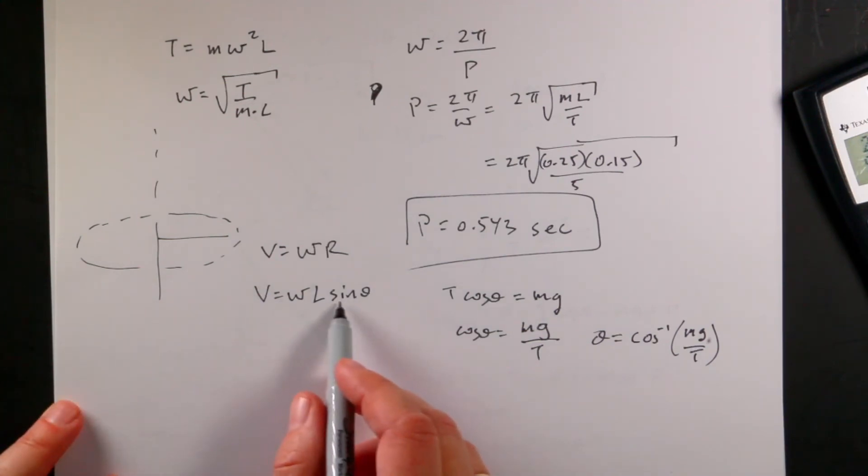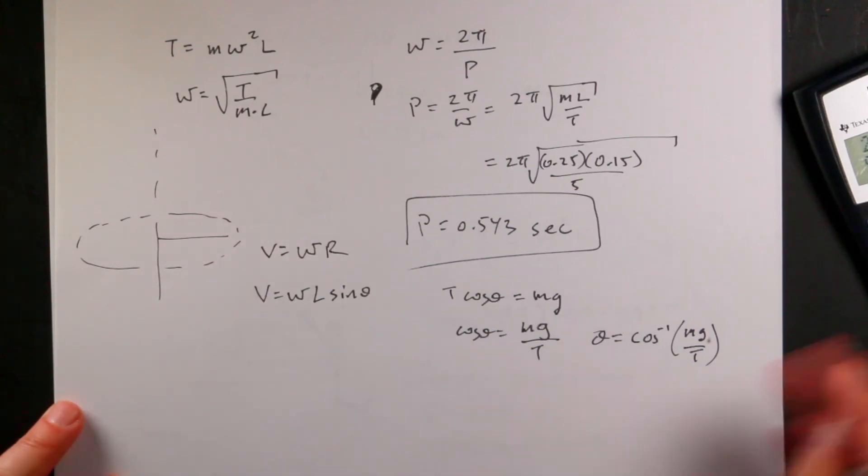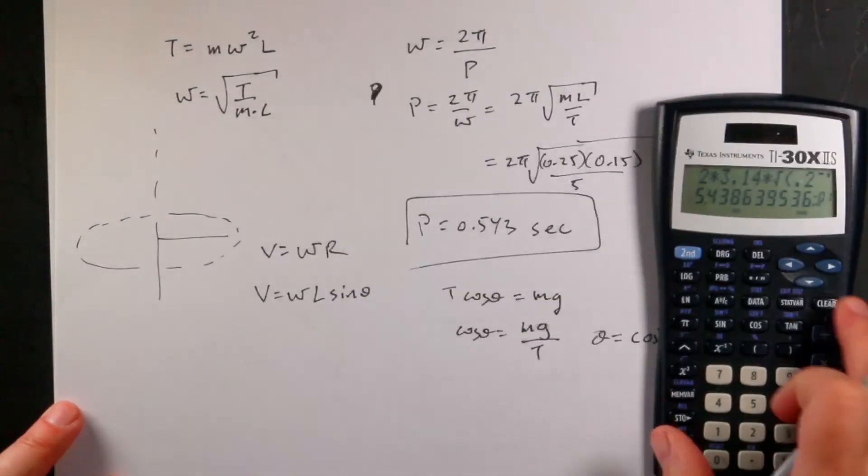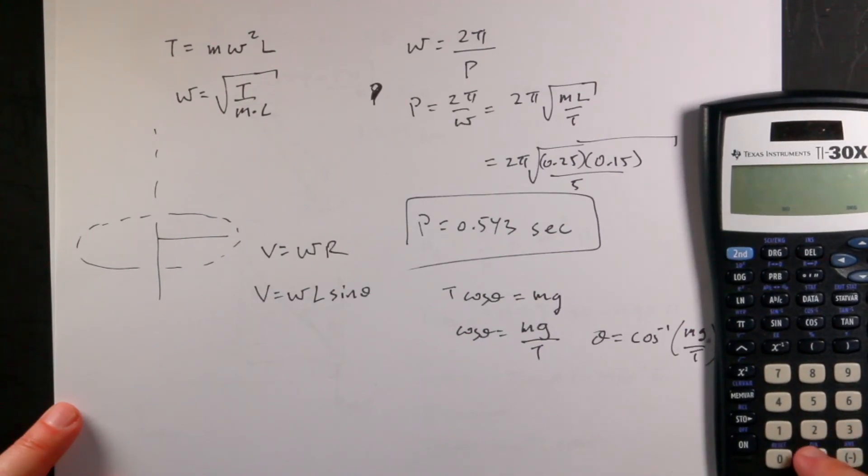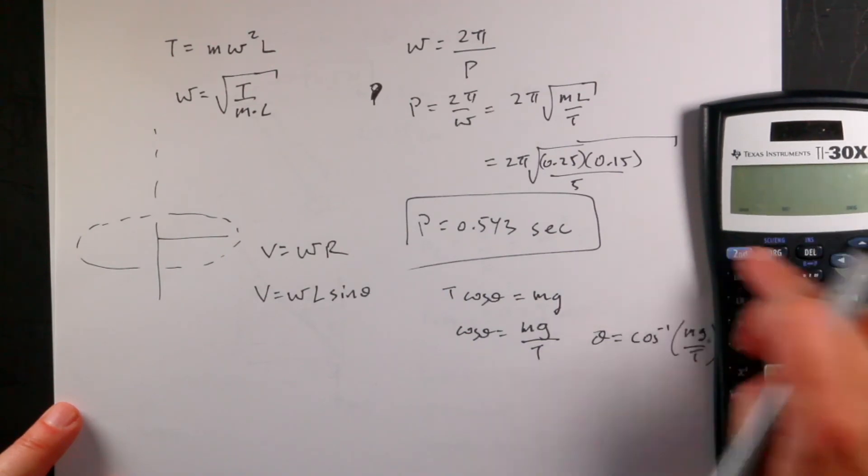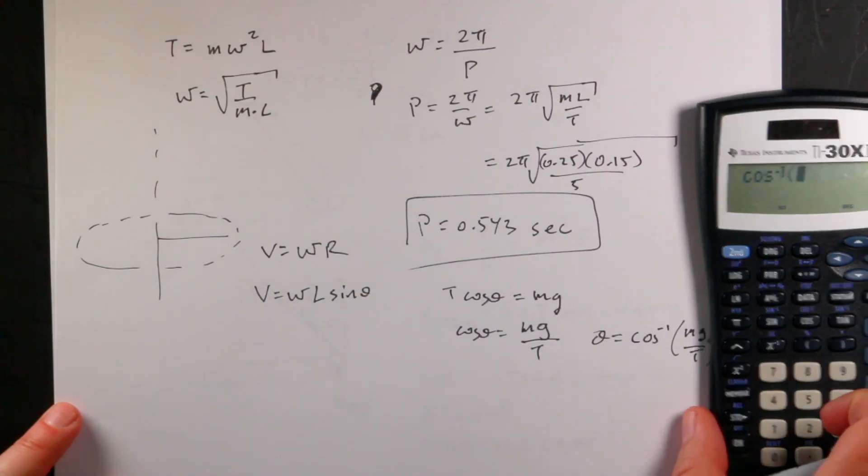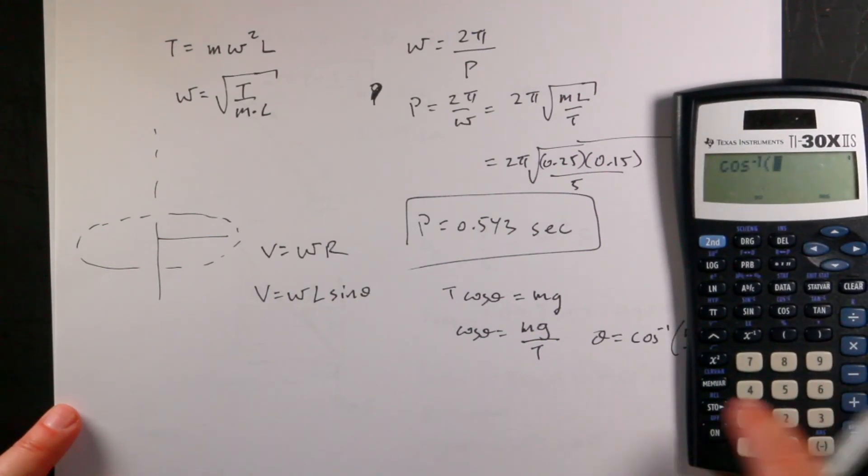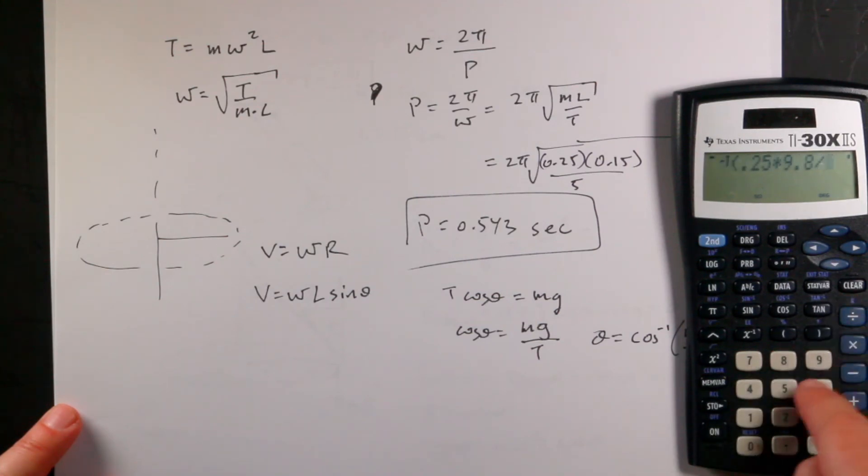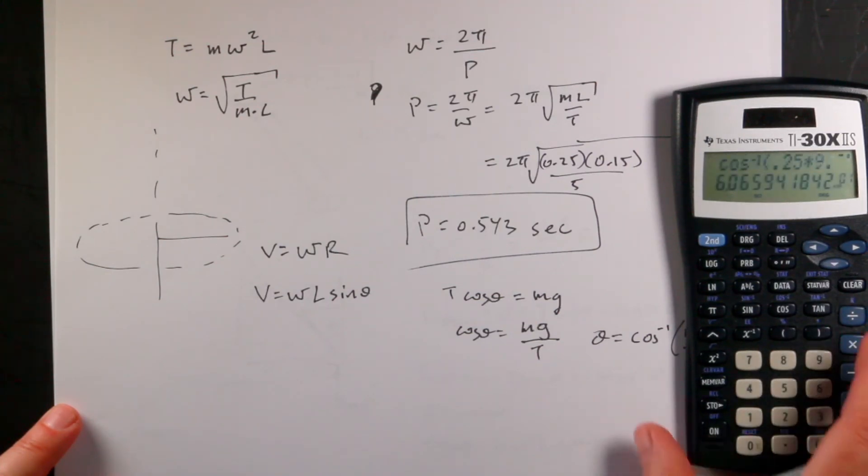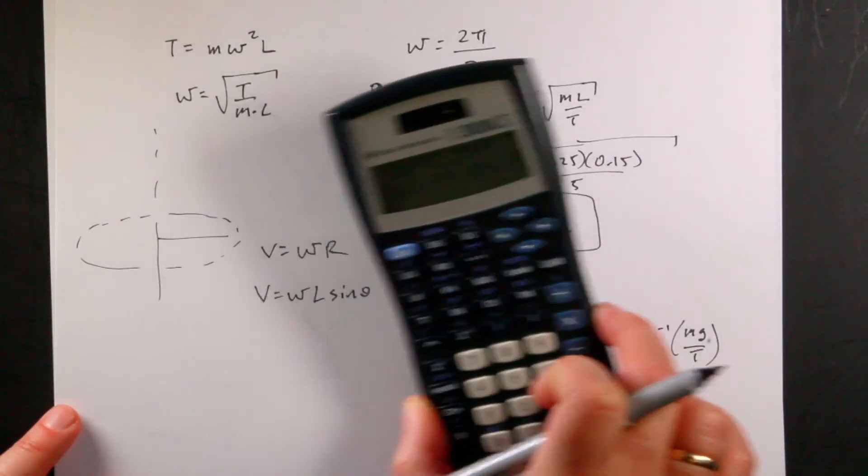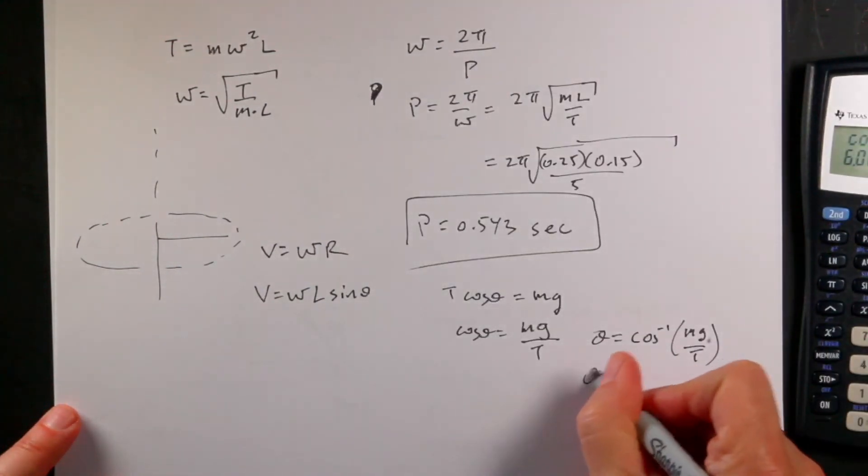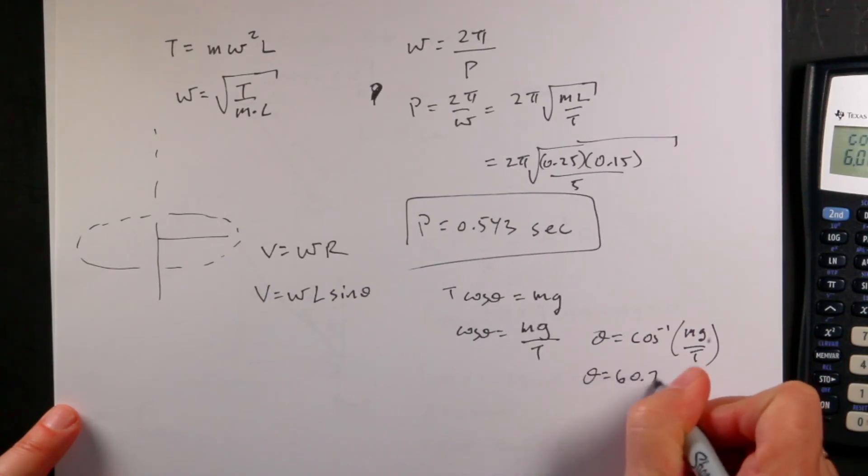And then the velocity is just going to be that. So let's find theta. So I'm in degrees, which is fine. So I'm going to say the mass. So I'm going to say inverse cosine. And then I'm going to say the mass, 0.25 times 9.8 divided by 5. Enter. And I get, what's that, 60.7. Let's say that. Theta equals 60.7 degrees.